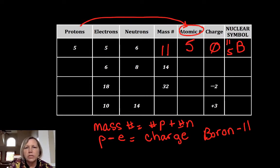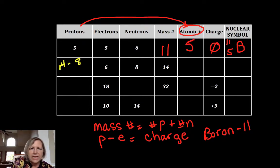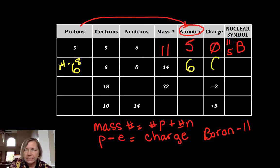In my next example, I know electrons, neutrons, and mass number. I need to find my protons. To find my protons, I take my mass number which is 14 minus my neutrons which is 8, and I get 6. So I have 6 protons, which means my atomic number is 6. My charge is protons minus electrons: 6 minus 6 is 0.